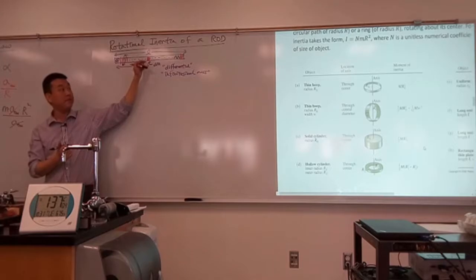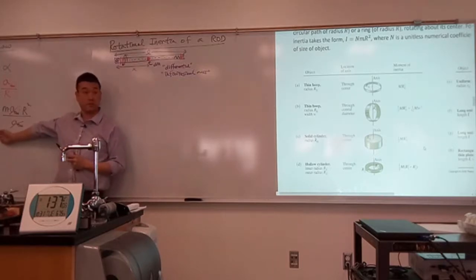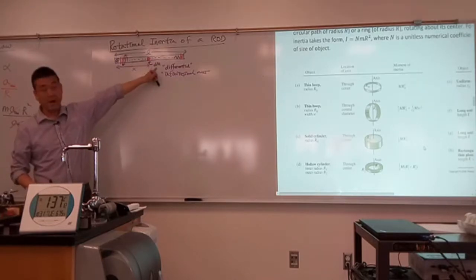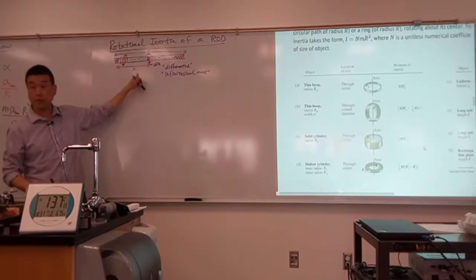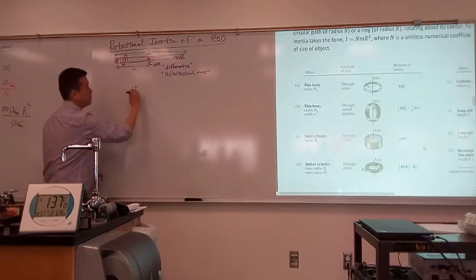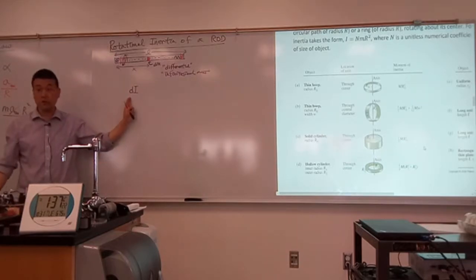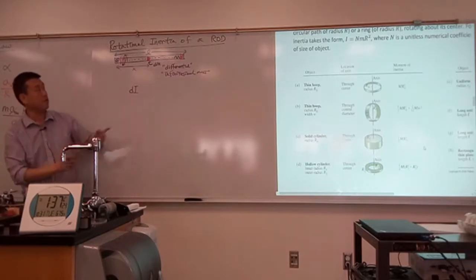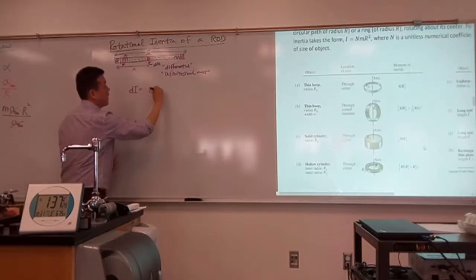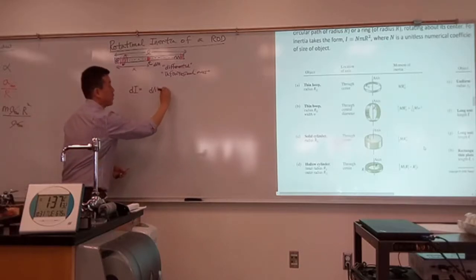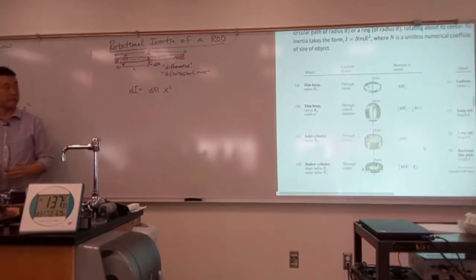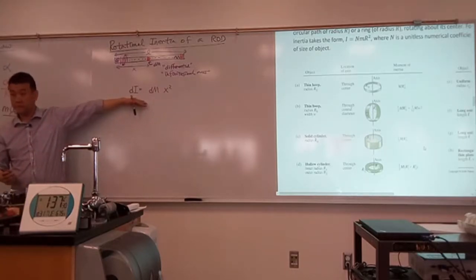Since it's something small enough to be treated like a point mass, I can use this relationship. The rotational inertia of this object equals the amount of mass it has times x squared. So let me write down dI — the infinitesimal rotational inertia, the very tiny portion of rotational inertia coming from this piece — is equal to dm times x squared.